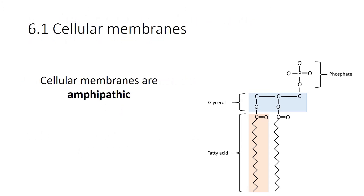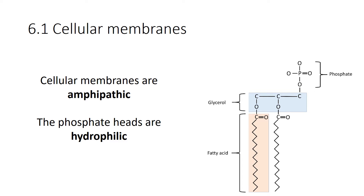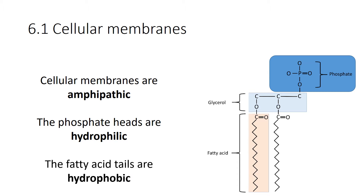One of the important properties of cellular membranes is that they are amphipathic. That means you have a phosphate head — which is very hydrophilic. Look at all those oxygens; they're capable of forming hydrogen bonds with water, hence they're water-loving. The fatty acid tails are hydrophobic — they're full of carbon and hydrogen and have no real way of forming hydrogen bonds with water.